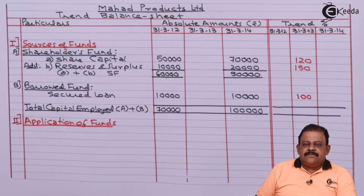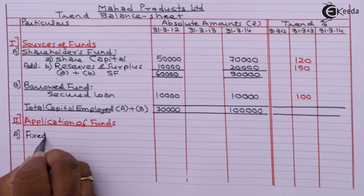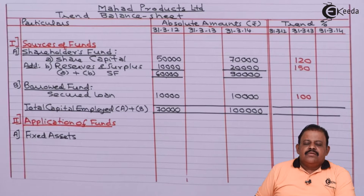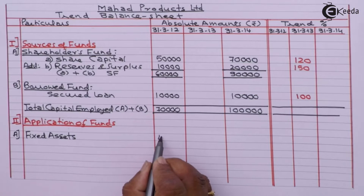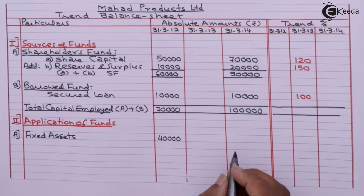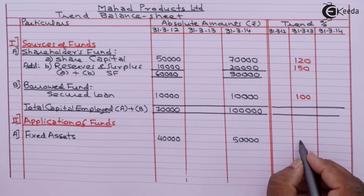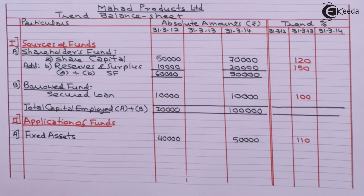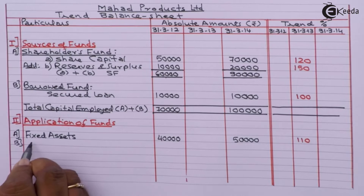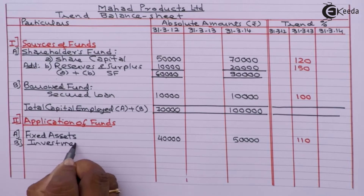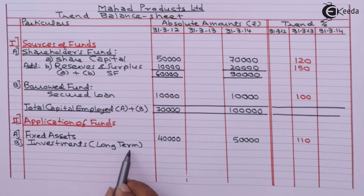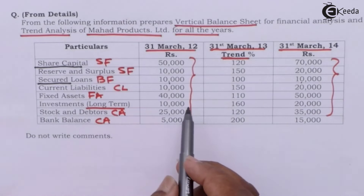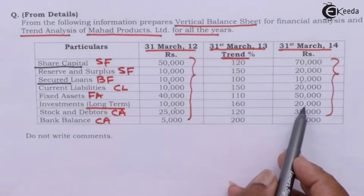Next we have application of funds. First item is fixed assets: 40,000 for 2012 and 50,000 for 2014. Next we have long-term investments: 10,000 for 2012 and 20,000 for 2014.